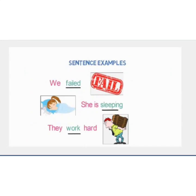Intransitive verbs can be understood with the help of more sentences. 'We failed' — whether in the exams, in hiding a project, or in our aims — the words at the end of these sentences are not objects because there is no direct receiver. 'She is sleeping' — there is no object to receive this action. 'They work hard' — work hard on what and where? There is no receiver of this action.